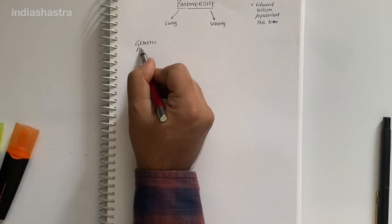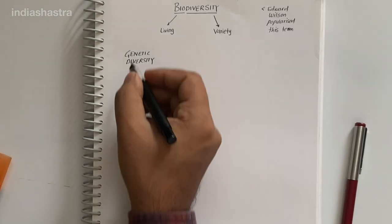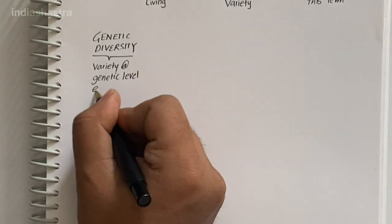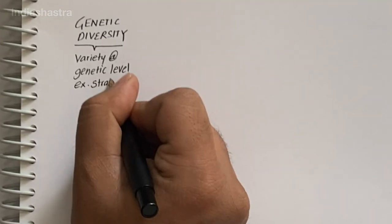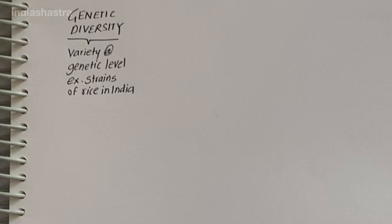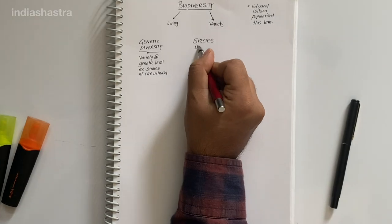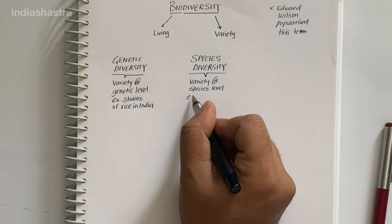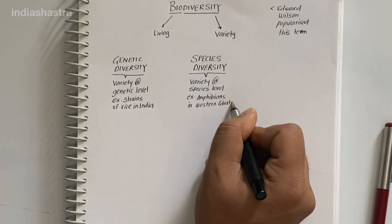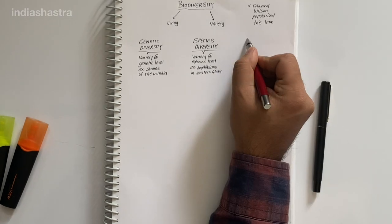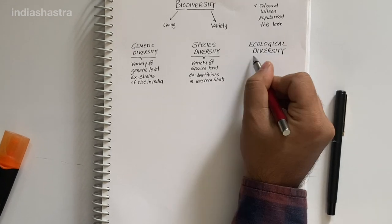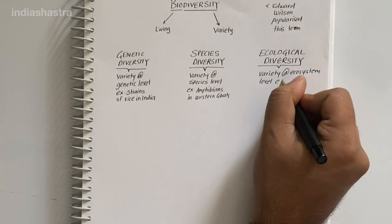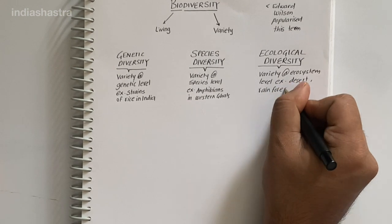The most important are genetic diversity - a single species showing high diversity at genetic level over its distributional range. India has more than 50,000 genetically different strains of rice and 1,000 varieties of mangoes. Species diversity is diversity at species level - Western Ghats have greater amphibian species than Eastern Ghats. Ecological diversity is diversity at ecosystem level. India has variety of ecosystems with deserts, rainforest, mangroves, wetlands, estuaries, coral reefs and alpine meadows.